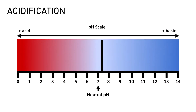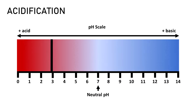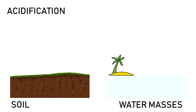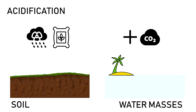Acidification is the process of lowering the pH, that is, the alteration of the chemical composition and the loss of neutralizing capacity, either from the soil or from the water masses. The acidification of the seas and oceans is caused by the increase of CO2 in the atmosphere, while acidification in soils, rivers and lakes is caused by acid rain and the deposition of different compounds and fertilizers.